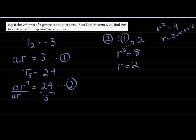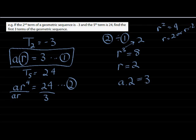To continue, I just need my first term. I'm going to use this to calculate my first term. I've just seen that r equals 2, so a times 2 will give me my second term, which was negative 3. To get a on its own, I divide both sides by 2, and I get that the first term is negative 3 over 2.